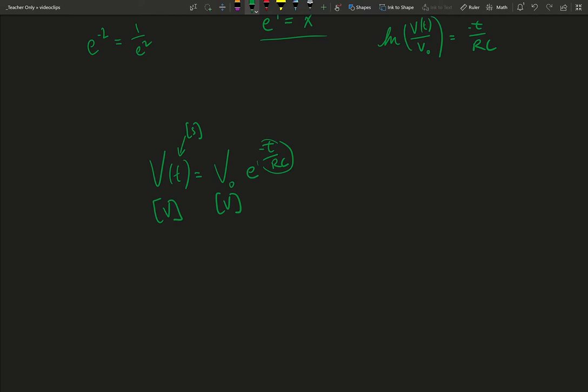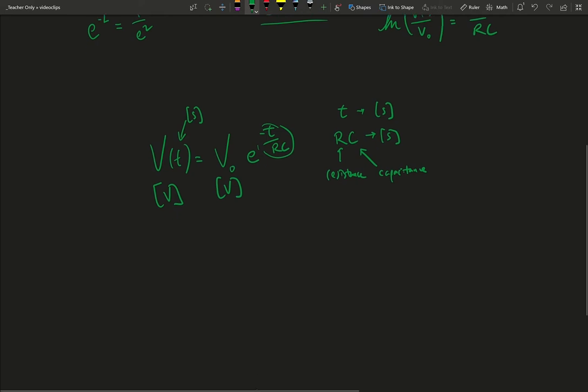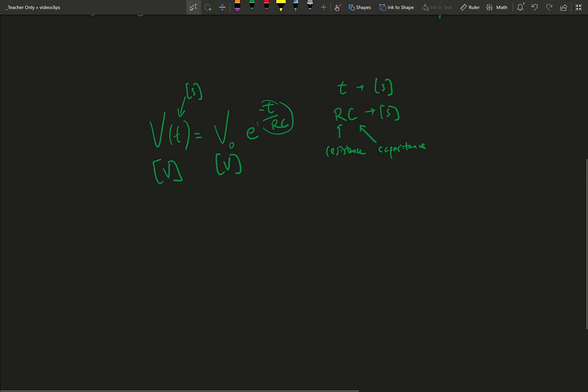That implies that the units of t, which we know are seconds, has to be the same as the units of r times c. That also must be seconds. So r being the value of resistance and c being the value of capacitance for the resistor and capacitor in this discharge circuit. Let's see if it actually holds up. This is where true dimensional analysis comes into play.